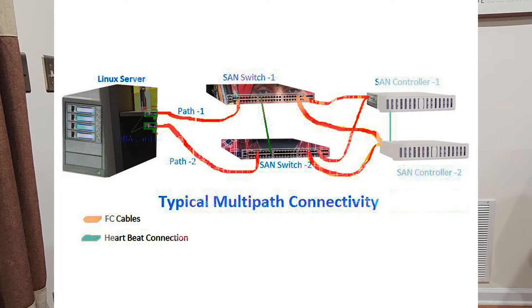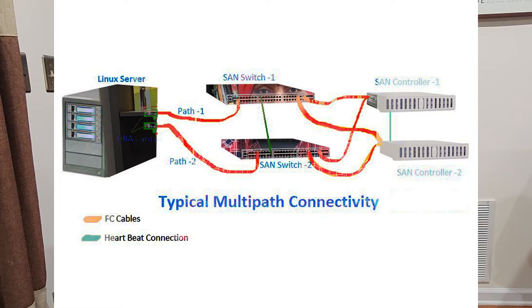Multipathing is a concept where you actually try to provide a redundant path between multiple systems within the compute. Let's take an example of a storage which is sitting separate to the operating system, and that storage is connected by a single wire. Due to some consequences that single wire goes bad, so then your storage will not be available for that operating system.